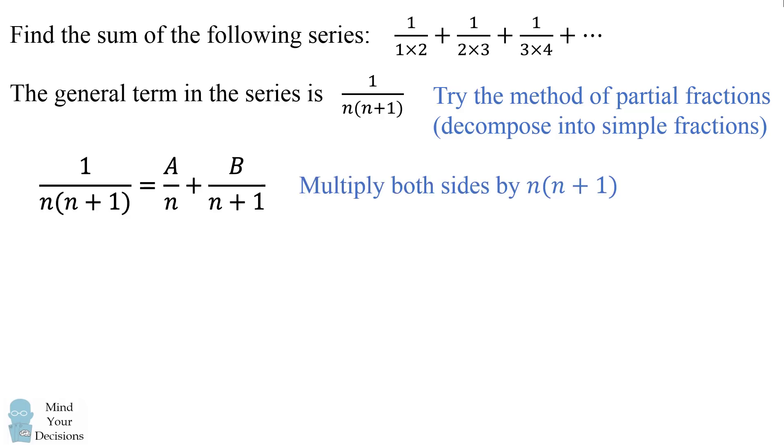So to solve this equation, we're going to multiply both sides by n times n plus 1. We end up with the equation that 1 is equal to A times the quantity n plus 1 plus B times n. Now we expand the right-hand side and group like terms.